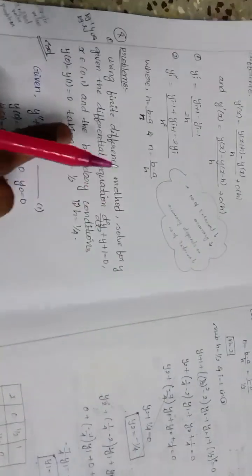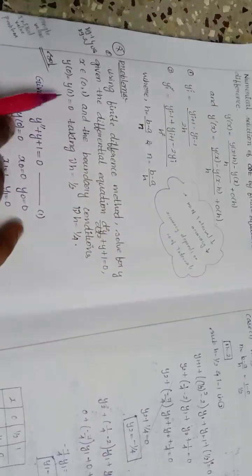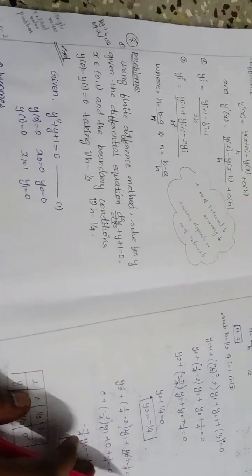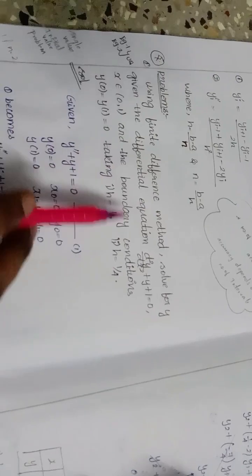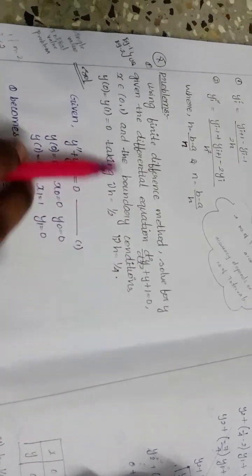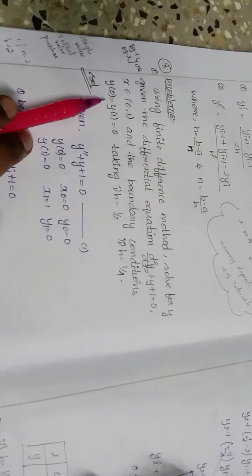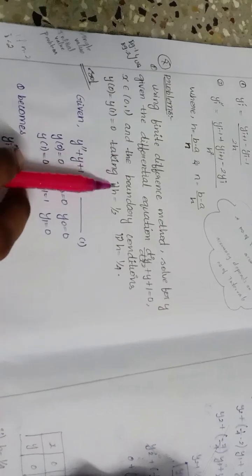Our problem is: using the finite difference method, solve for y given the differential equation d²y/dx² + y + 1 = 0, where x belongs to [0, 1], with boundary conditions y(0) = 0 and y(1) = 0, taking h = 1/2 and h = 1/4.